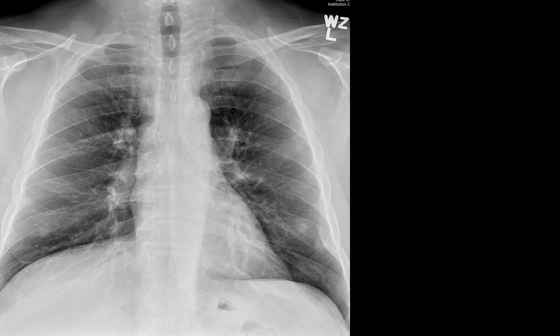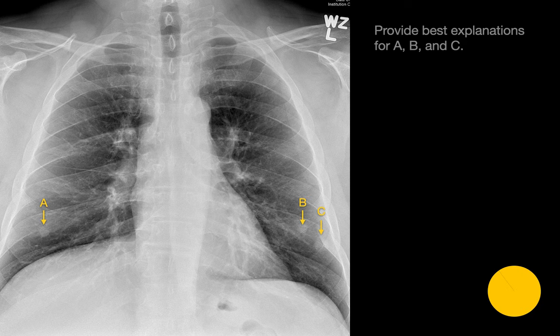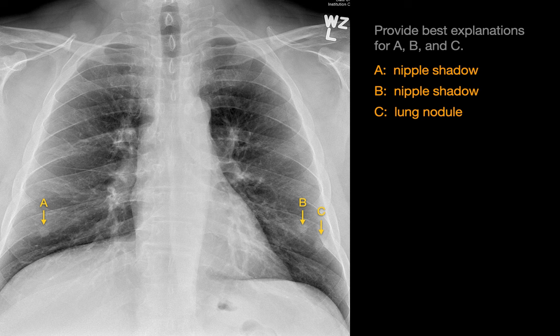There are three nodular opacities on this chest radiograph. What's your best explanation for each one? Nodular opacities A and B are both relatively round, well-circumscribed along their medial, lateral, and inferior margins, but their superior margins are indistinct. They're also relatively symmetrically positioned. All of these features are characteristic for overlapping nipple shadows. Nodular opacity C has an oblong appearance and is circumscribed all 360 degrees around and suspicious for a lung nodule.